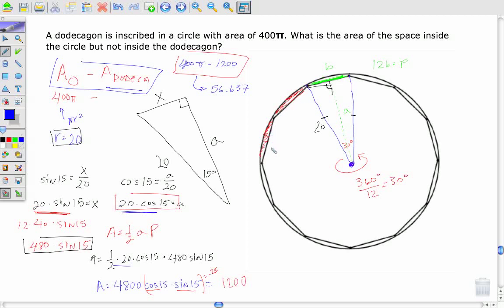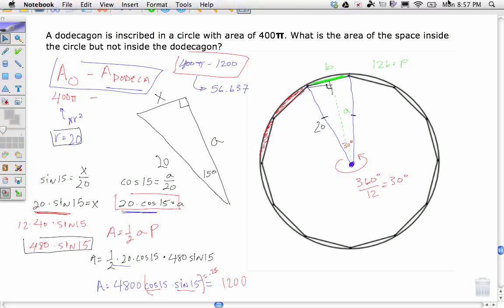So we can see that in the grand scheme of things, not that much space is between the dodecagon and the circle. And that's understandable because the more sides we get in that figure that's inside the circle, the less space is going to be left between that figure and the circle.